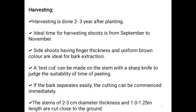Harvesting is done two to three years after planting. The ideal time for harvesting shoots is from September to November. Side shoots having finger thickness and uniform brown color are ideal for bark extraction. A test cut can be made on the stem with a sharp knife to judge the suitability for peeling — if the bark separates easily, cutting can be commenced immediately. Stems of two to three centimeter diameter and 1.0 to 1.25 meter length are cut close to the ground.